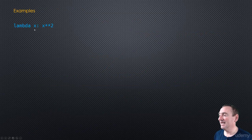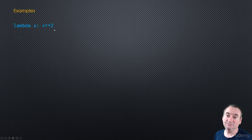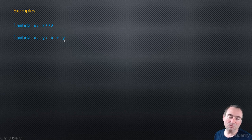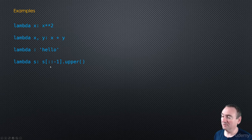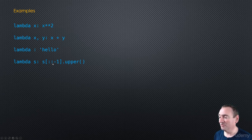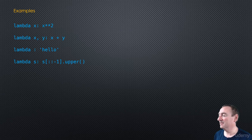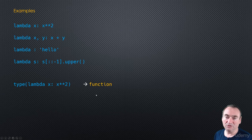Let's see some examples. 'Lambda x: x**2' is a function with a single parameter x that returns x squared. 'Lambda x, y: x + y' is a function that takes two parameters x and y and returns x plus y. We can also have a lambda with no parameters — when called, it just returns the string 'hello'. We can get more complex: 'lambda s: s[::-1].upper()' takes a parameter s, reverses it, and converts it to uppercase. If you check the type of any of these expressions, it returns a function — an honest-to-goodness function in Python.